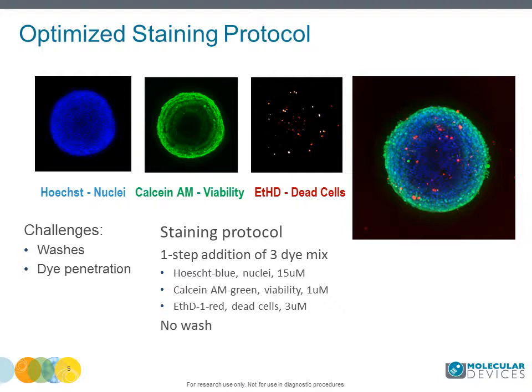Hoechst was used to measure total cell count and nuclear shape. Ethidium homodimer was used to measure dead cells. Suggested concentrations are shown on the slide.